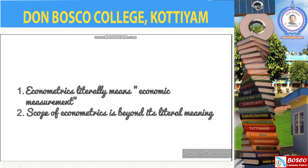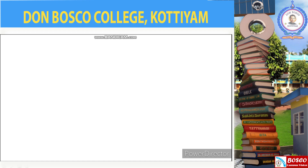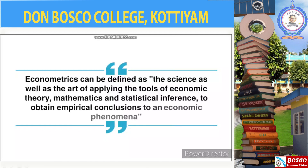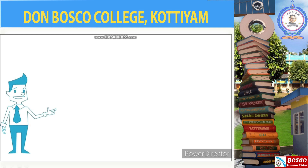The term econometrics literally means economic measurement, but the scope of econometrics is much broader than the literal meaning of the term. It can be defined as the science as well as the art of applying the tools of economic theory, mathematics, and statistical inference to obtain empirical conclusions to an economic phenomenon. If you closely observe the definition, you can find three features of econometrics: econometrics is a science, econometrics is an art, and it obtains empirical conclusions.